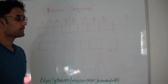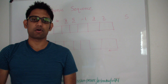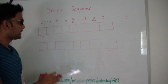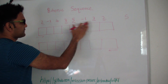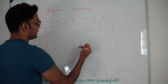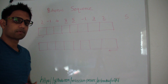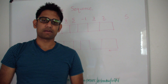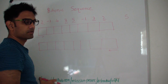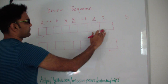In my other video, I have already discussed how to find the longest increasing subsequence. The idea is to find the longest increasing subsequence from left to right, and then the longest increasing subsequence from right to left, and then add them up — which will give us the longest bitonic sequence.